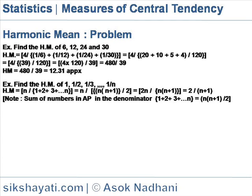This gives 4 divided by 39/120, which equals 4 × 120/39, equals 480/39. So the HM is equal to 480/39, which is approximately 12.31.